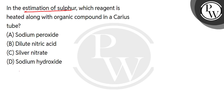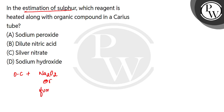There are four options given. In the Carius tube — which is a hard solid test tube called a Carius test tube — for the estimation of sulfur, we heat the organic compound with either sodium peroxide or fuming nitric acid.